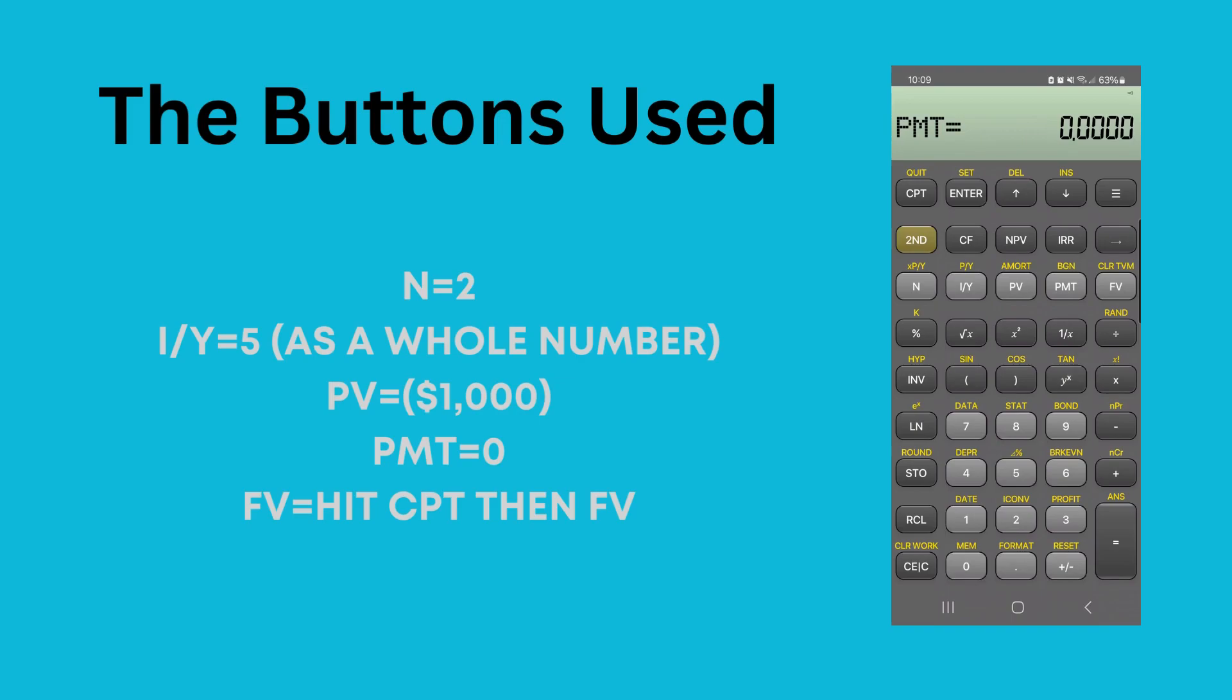What we're doing is, in this case, our N is going to be 2 because we have two years. So, we hit 2 and then we hit N.